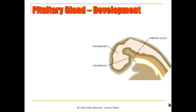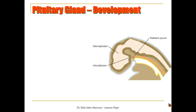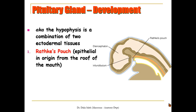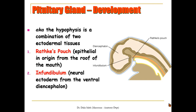For the development of the pituitary gland, also known as hypophysis cerebri, we should know that the pituitary gland is ectodermal in origin but derived from two different sources. One source is called Rathke's pouch, and the other one is called the infundibulum. Rathke's pouch is derived from the epithelium of the roof of the mouth, while the infundibulum is derived from the neural ectoderm of the diencephalon.